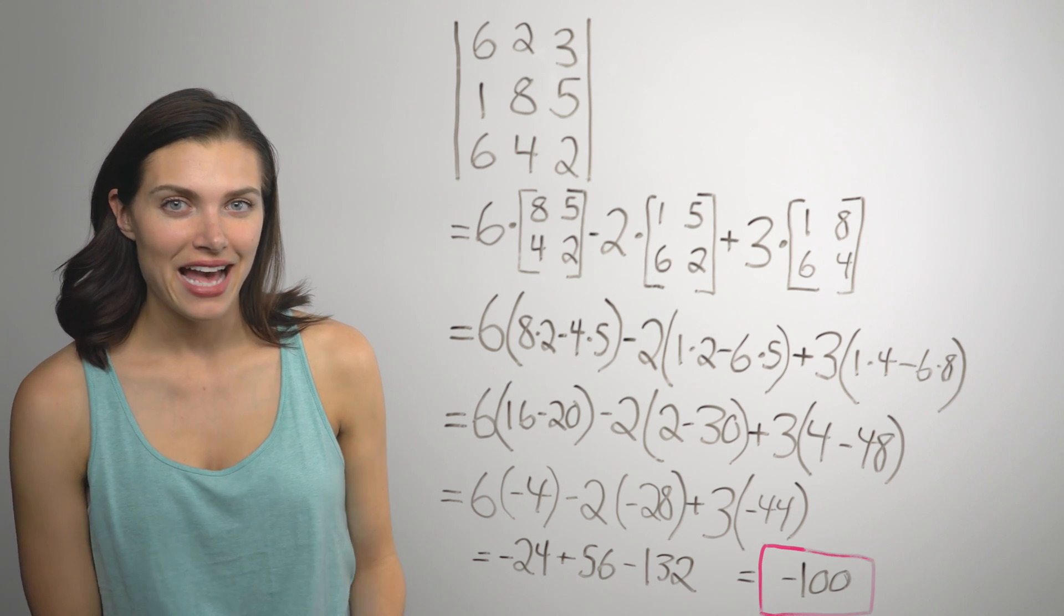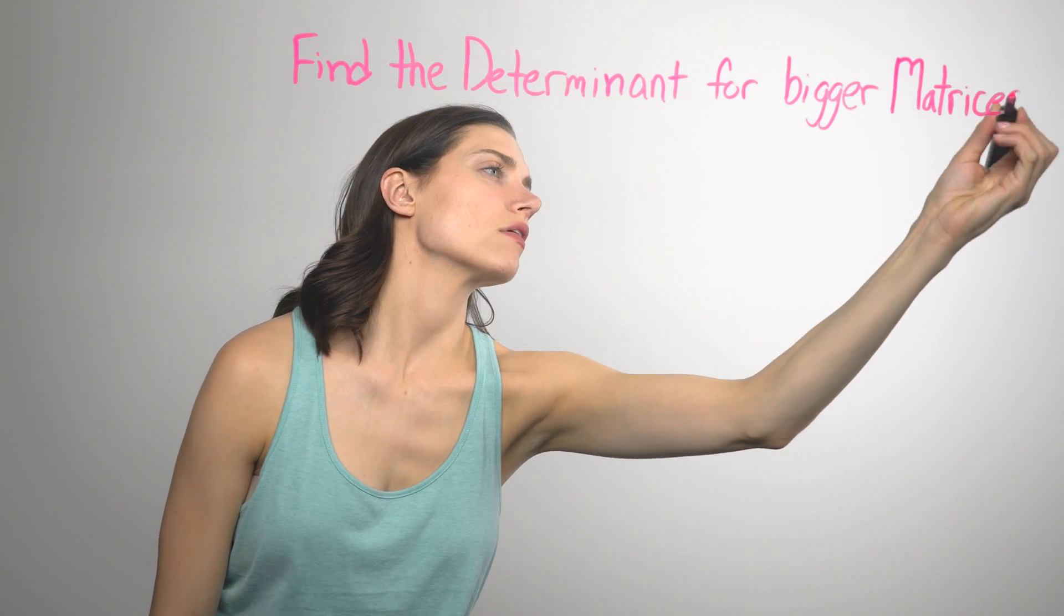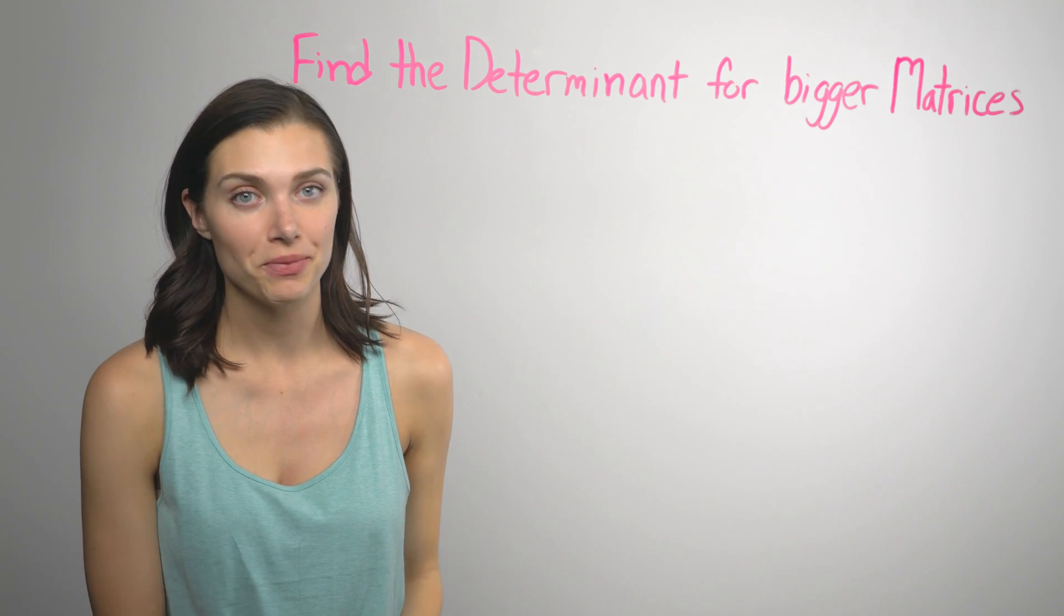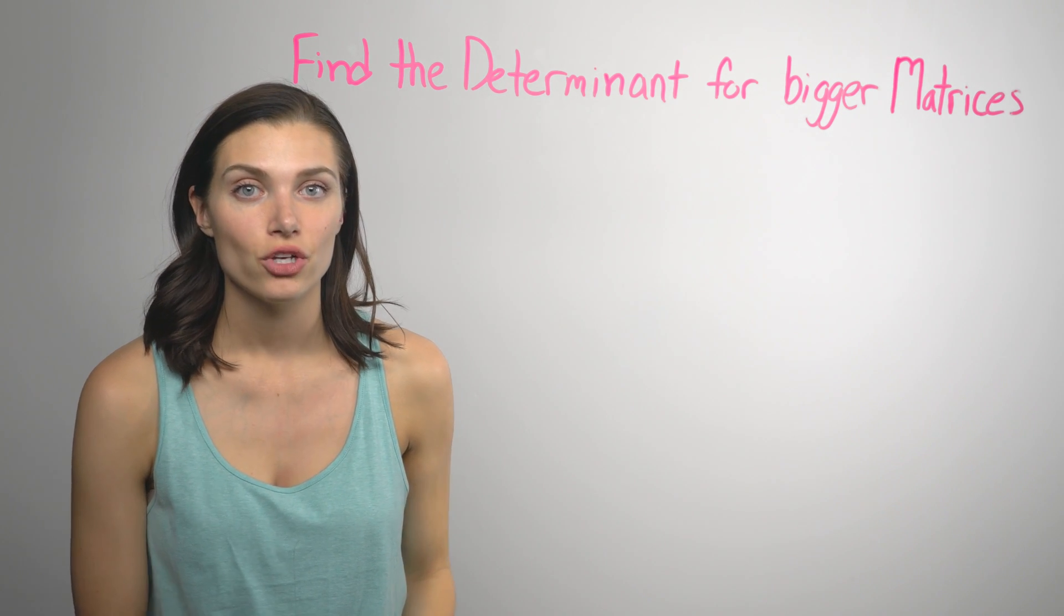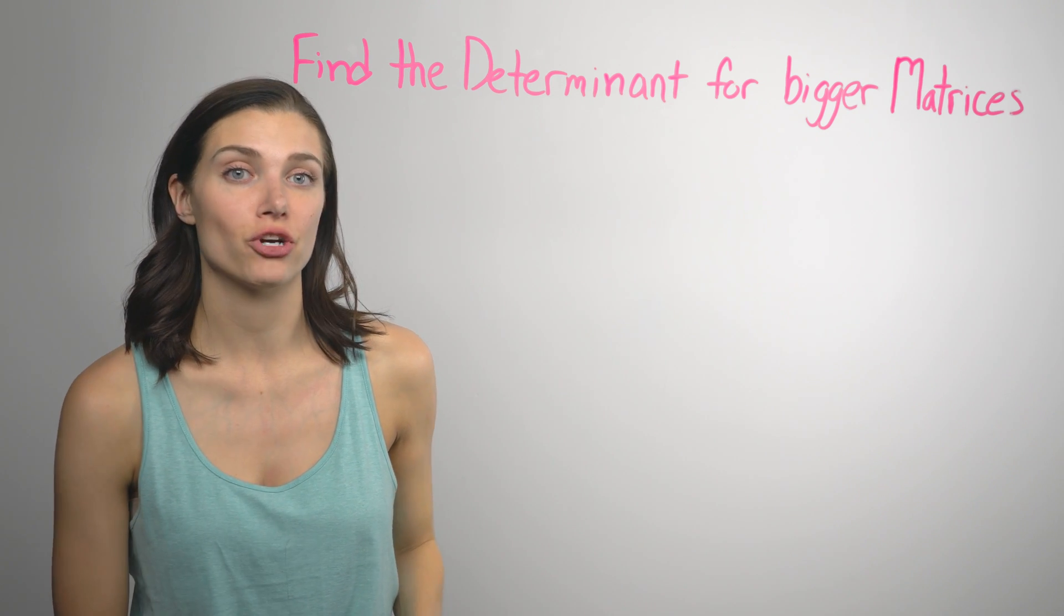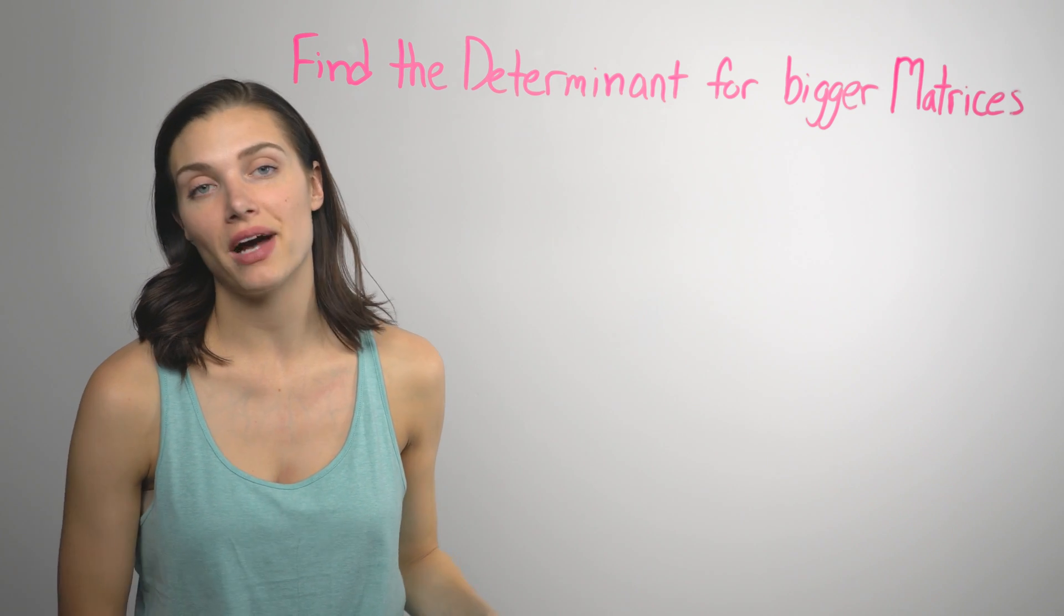So now, how do you find the determinant for bigger matrices? For bigger matrices, the way you find the determinant is basically the same. You break the matrix up into smaller matrices and find the determinant for those. Then combine the results.